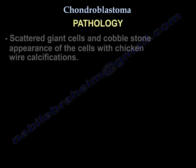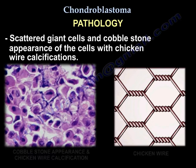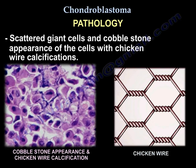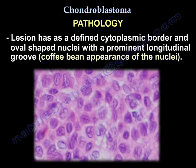Pathology: you may find scattered giant cells and a cobblestone appearance of the cells with chicken wire calcifications. One-third of the lesions may have an aneurysmal bone cyst. The lesion is chondroid with polygonal cells with a defined cytoplasmic border and oval-shaped nuclei with a prominent longitudinal groove — giving a coffee bean appearance of the nuclei.